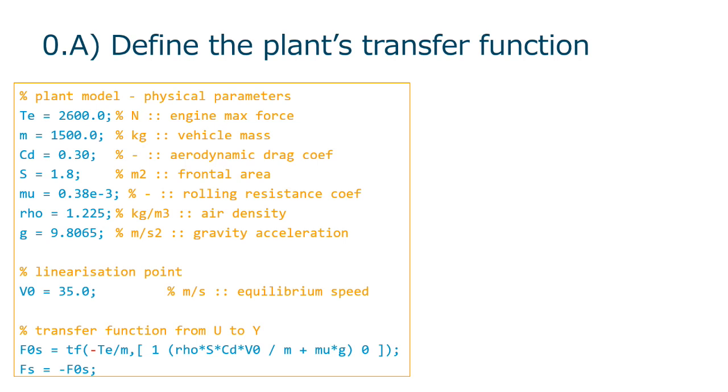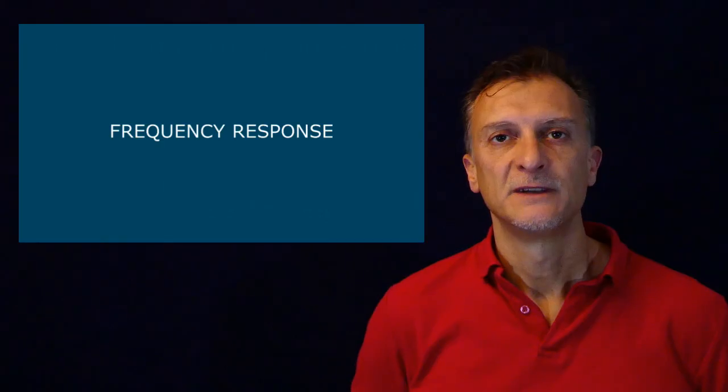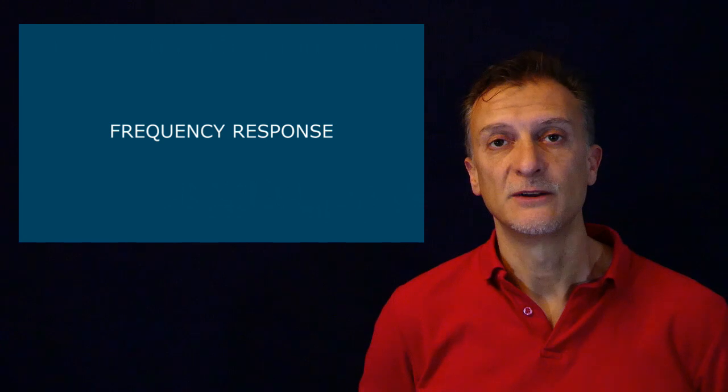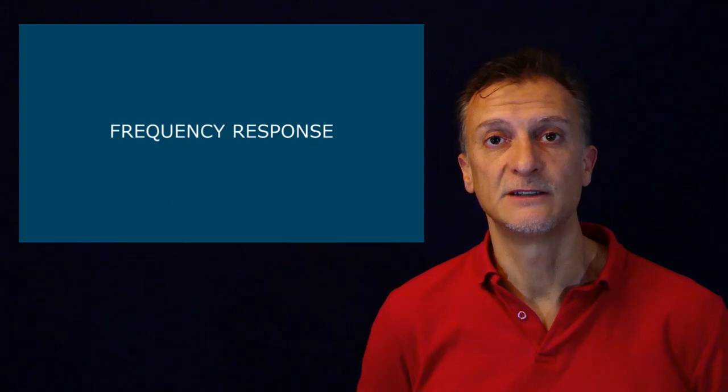So, defining the parameters on the script file, we get the numerical version of the transfer function in the continuous time domain. From this point on, we will focus on the frequency response and its representations, always with the objective in mind of modifying the dynamic behavior of the closed loop system. This is the control system.